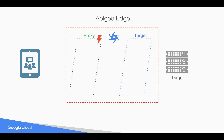Whenever a fault occurs in the proxy endpoint — for example, you are doing API key validation and the key turns out to be invalid, or you are doing a quota check and the quota gets exhausted — you're going to do fault handling in the proxy endpoint. In that case, you're going to write the fault rules in the proxy endpoint.